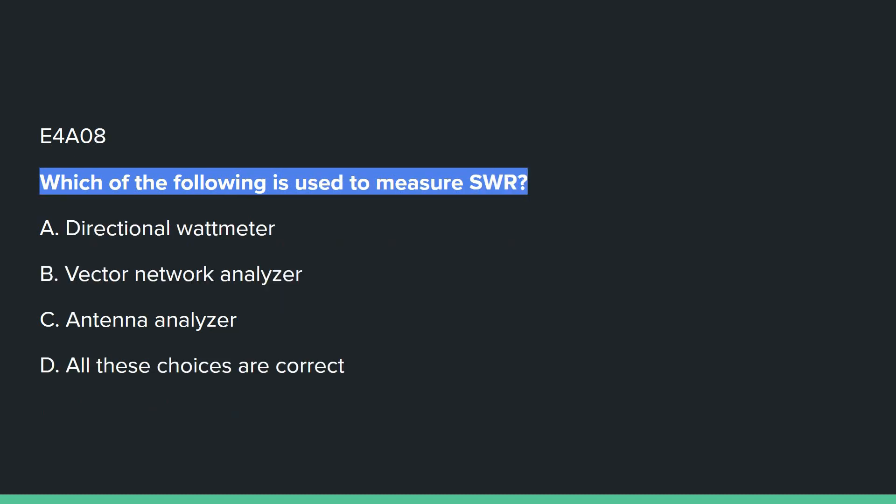E4A08: Which of the following is used to measure SWR? Answer D: all of these choices are correct — you can use a directional wattmeter, a vector network analyzer, or an antenna analyzer.